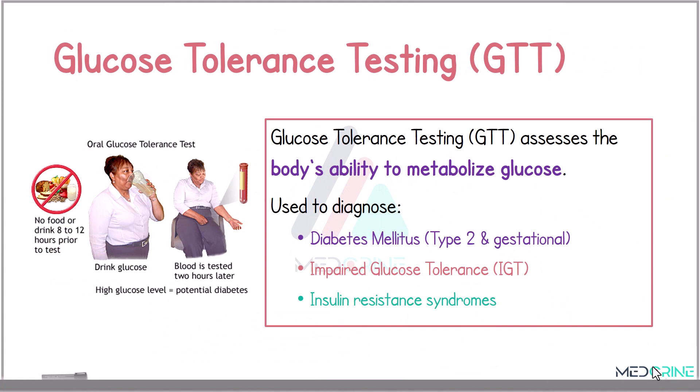Glucose tolerance testing is a test that assesses the body's ability to metabolize glucose. This test is used to monitor blood sugar levels and is performed when there is a suspicion of type 2 diabetes mellitus. It indicates how well the sugar from the diet can be absorbed into the body cells, and is used in the diagnosis of diabetes mellitus, impaired glucose tolerance, and insulin resistance syndromes.